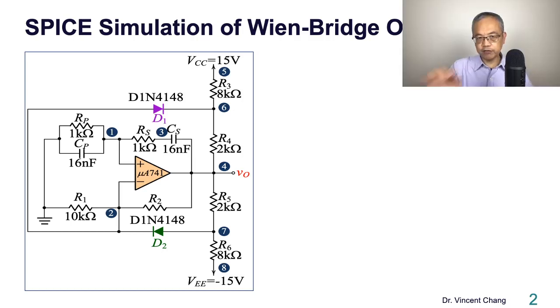On the left-hand side of the slide you see a Wien-Bridge oscillator with so-called non-linear amplitude control.